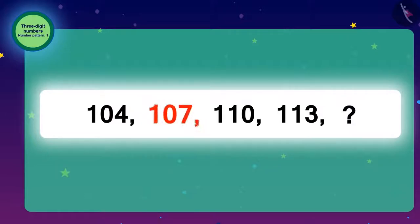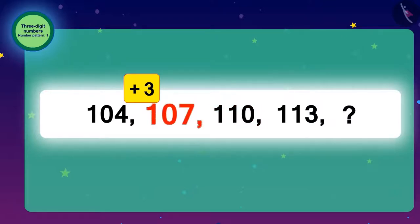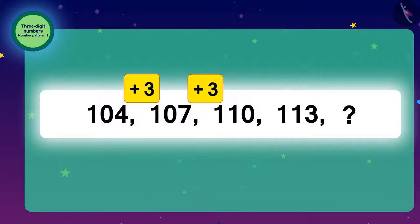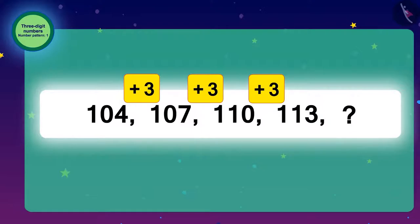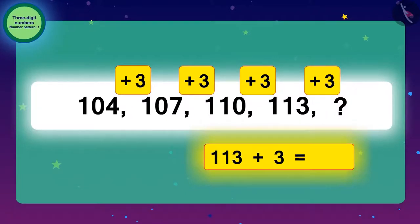To get from 104 to 107, we have to add 3 to 104. Then to get from 107 to 110, we will add 3 to 107. Similarly, we can add 3 to every number and find the next number. To find the next number, we have to add 3 to 113. So, if we add 3 to 113, then the next number would be 116. This will be the answer to the code.